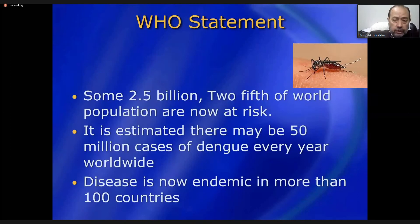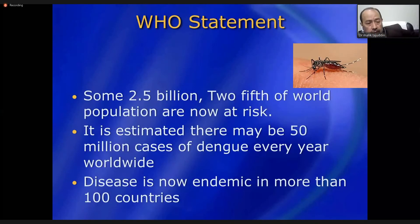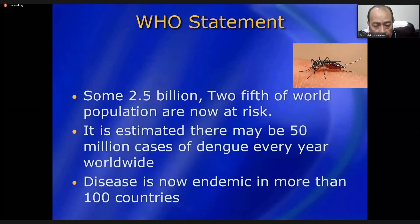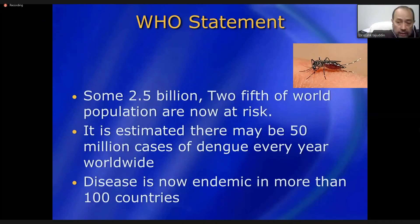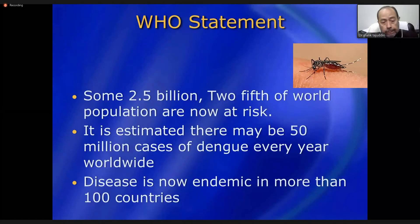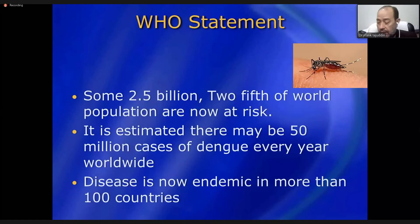Nearly half the world's population — over 2.5 billion, or about 40 percent — is at risk. It is estimated that there are approximately 50 million cases of dengue fever worldwide every year. The disease is now endemic in more than 100 of the 194 countries in the world. Endemic means the disease is present in that society at all times in significant numbers.